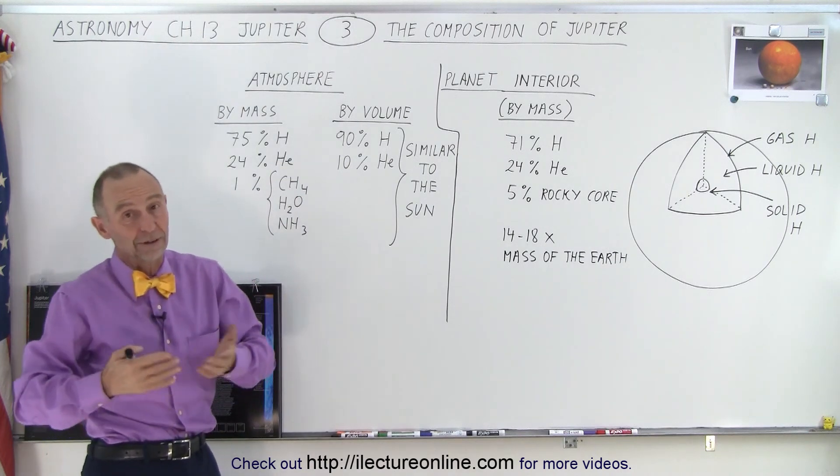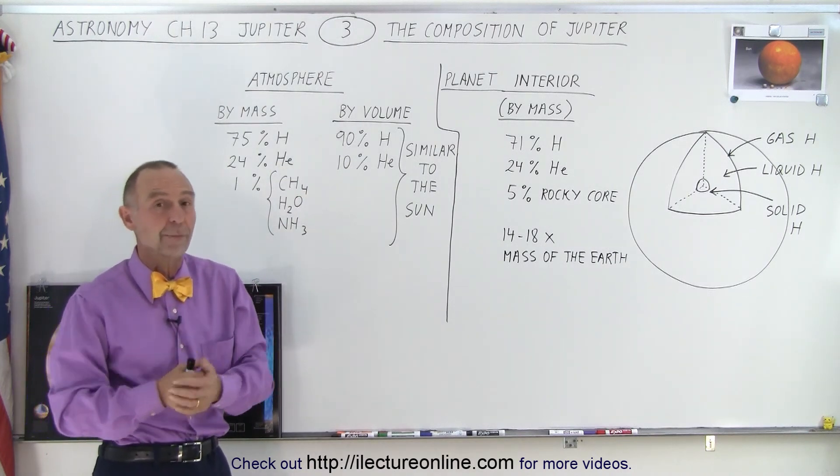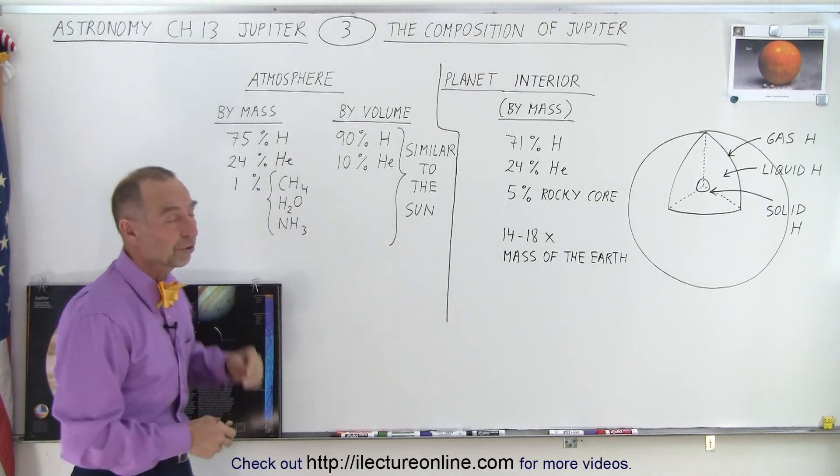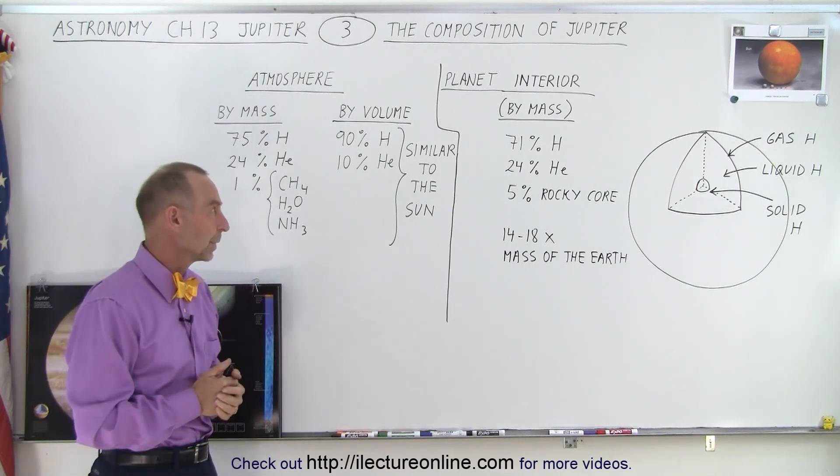The sun is roughly 75% hydrogen and about 25% helium, about 1% of everything else. So very similar to the atmosphere of Jupiter.